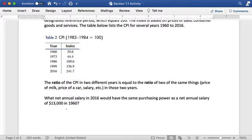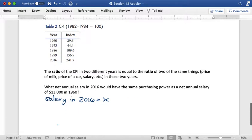So we are looking at the salary in 2016. That's going to be what we want to find. So I'm going to set that equal to X. And I want to know what salary would have the same purchasing power as a salary of $13,000 in 1960. So X over $13,000 ratio.